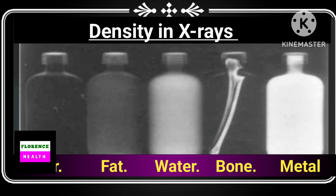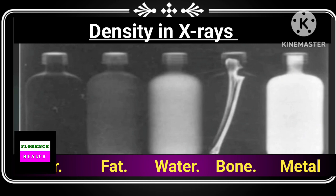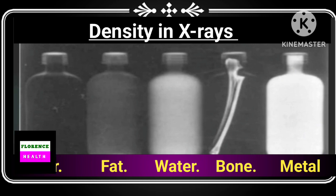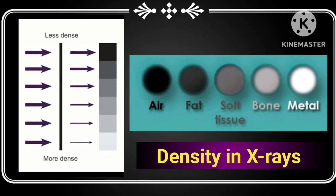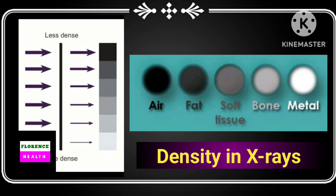Regarding density in X-ray: more dense means toward the whiter side, less dense means toward the blacker side. Air has the least density and metal has the most density. As you proceed from air to metal, density gradually increases; as you proceed from metal to air, density gradually decreases.